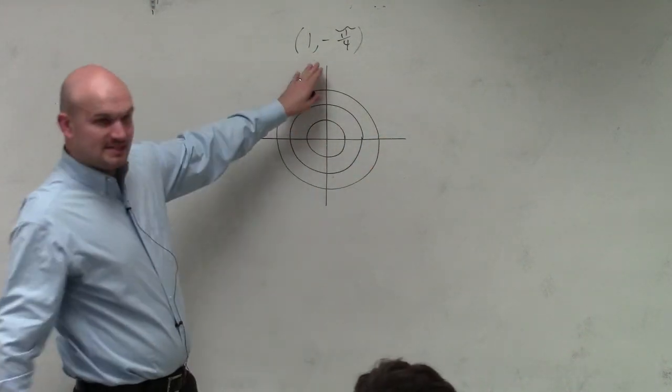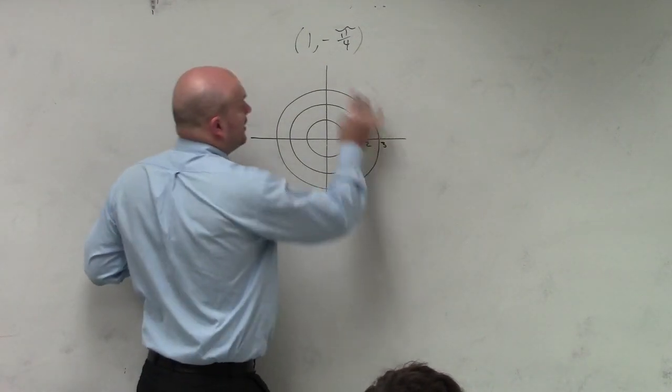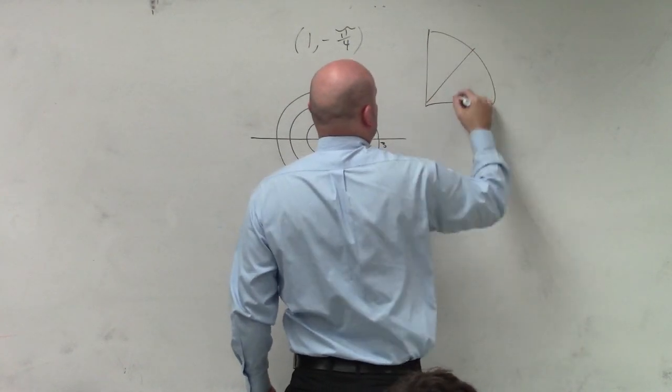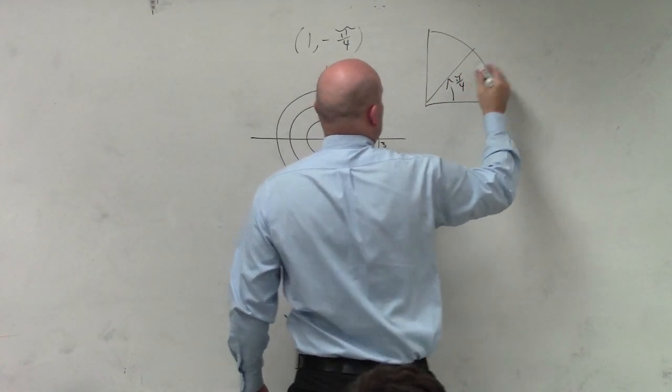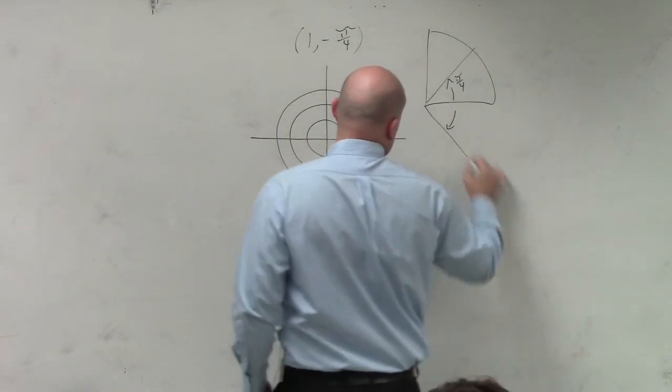So remember, 1 is the distance from the center, so that's going to be on the first outer ring. And then the angle is going to be negative pi over 4. Well, we remember what pi over 4 was. Pi over 4 was right there. So negative pi over 4 is going to be right there.